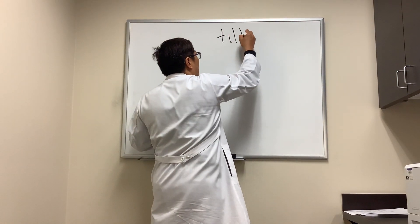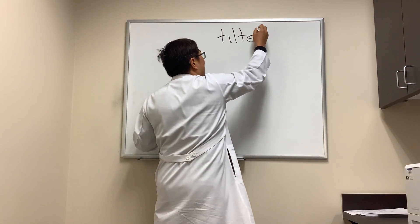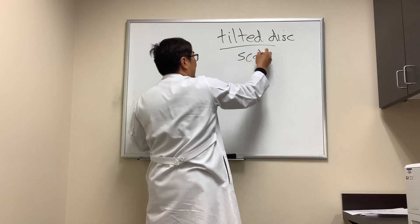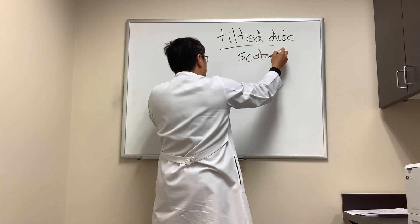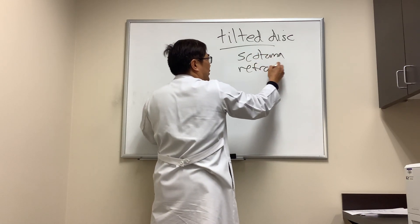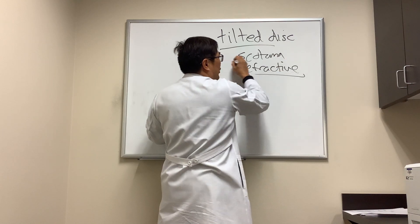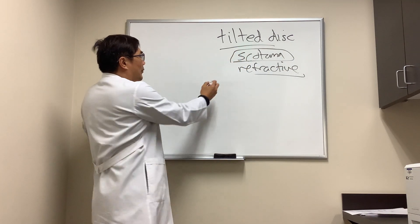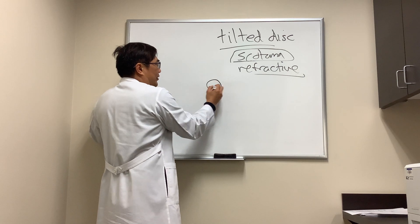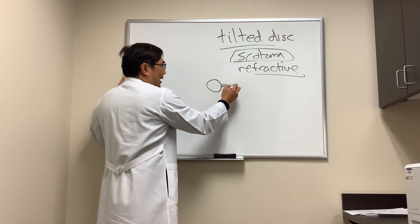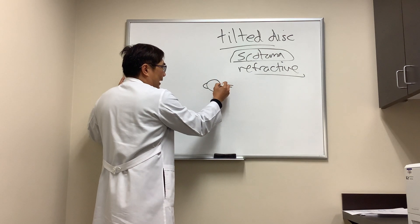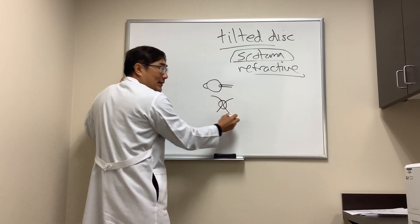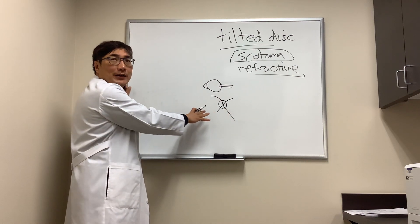Someone wanted to know about why the tilted optic disc syndrome causes a scotoma and if that scotoma is a refractive scotoma or not. Scotoma means blind spot, and when you have a normal optic nerve it inserts into the back of the eye and normally makes an oval like this, with blood vessels coming out. This is a normal optic nerve.